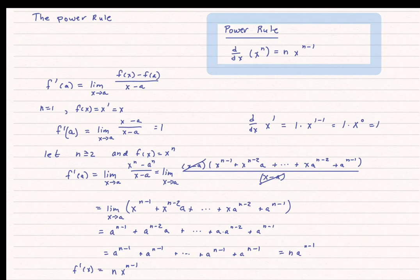This is the only proof I'm going to go through. You don't have to recreate the proof, but you do have to be able to use the power rule. Notice the power rule actually works in the constant case too — if I had a constant c, it would be c times x to the 0. By the power rule, that would be 0 times x to the negative 1, and anything times 0 is 0. So the constant rule is really rolled into the power rule.